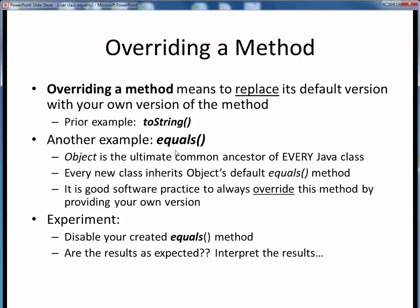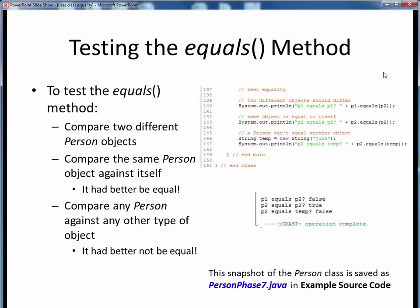Speaking of which, let's see how to actually test and use our new equals method. We've said before that it's a good incremental development practice to always test our new methods as we implement them. Here's some test code we'll add to our person class main method to test the equals method. It's a good idea to always, at a minimum, perform the following three tests.